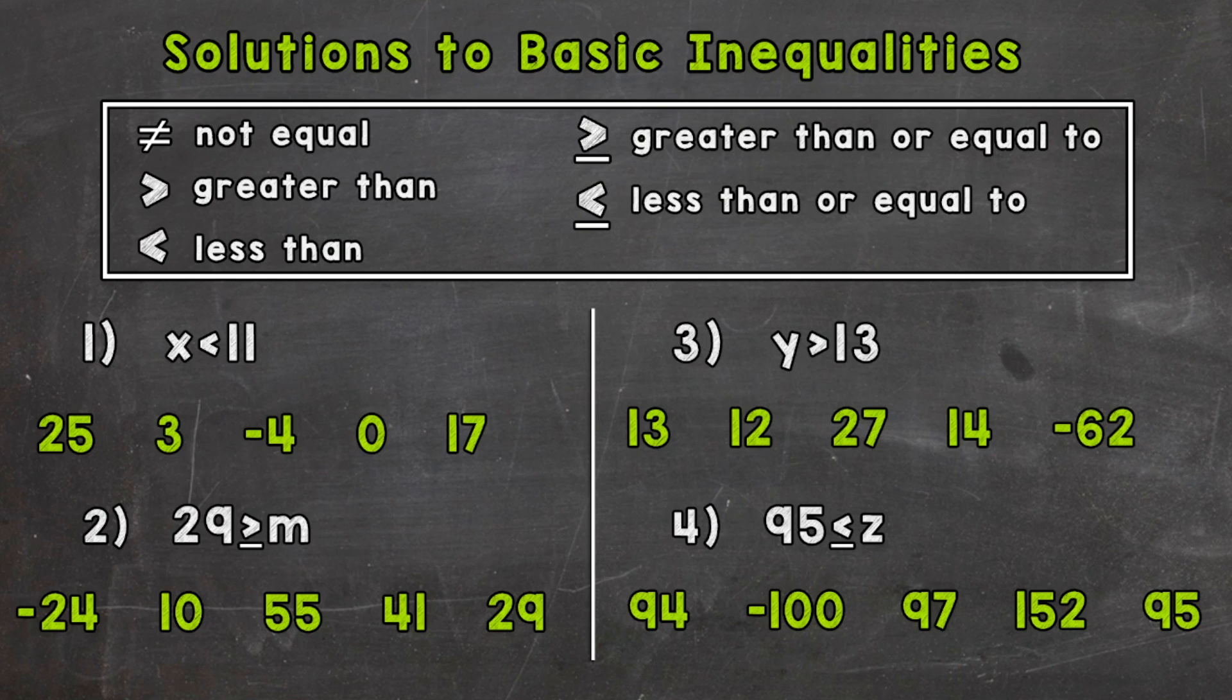So we are going to go through four examples of inequalities and determine which values make the inequality true. So let's jump into number one, where we have x is less than 11.